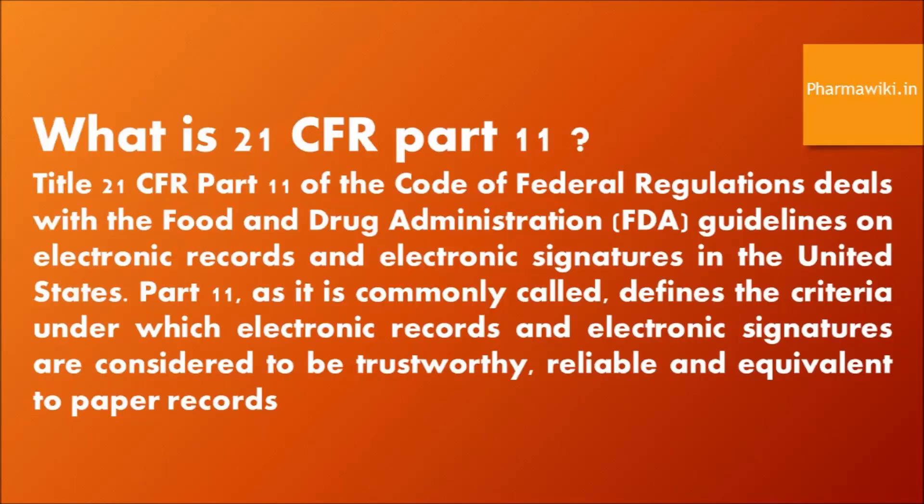What is 21 CFR Part 11? Title 21 CFR Part 11 of the Code of Federal Regulations deals with Food and Drug Administration guidelines on Electronic Records and Electronic Signatures in the United States. Part 11, as it is commonly called, defines the criteria under which electronic records and electronic signatures are considered to be trustworthy, reliable, and equivalent to paperwork.